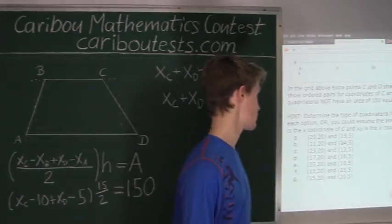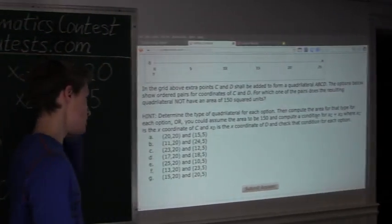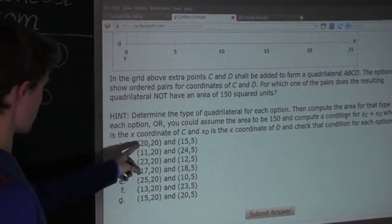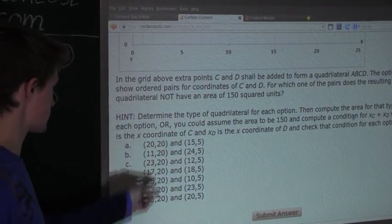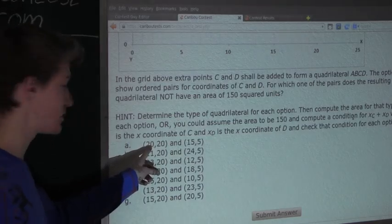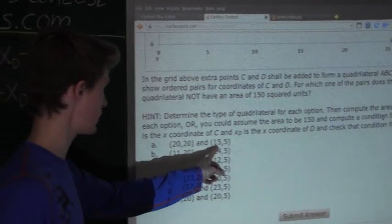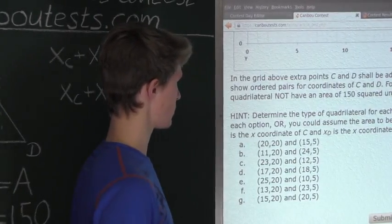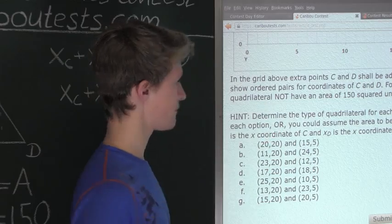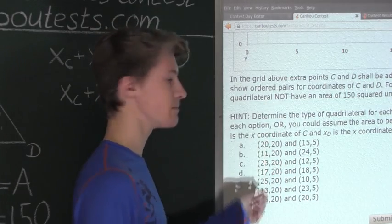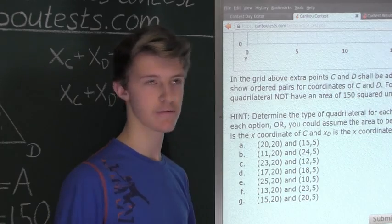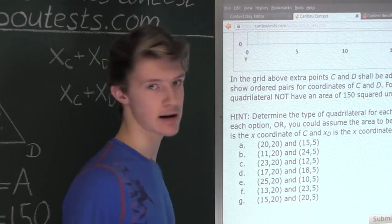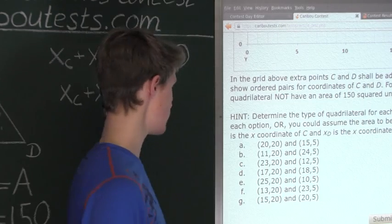So now let's look at the options. So here the x-coordinate, this is the x-coordinate of point C, and this is the x-coordinate of point D. These two numbers must equal 35, and to find the solution, one of them must not equal 35, so that it does not have an area of 150 squared units.